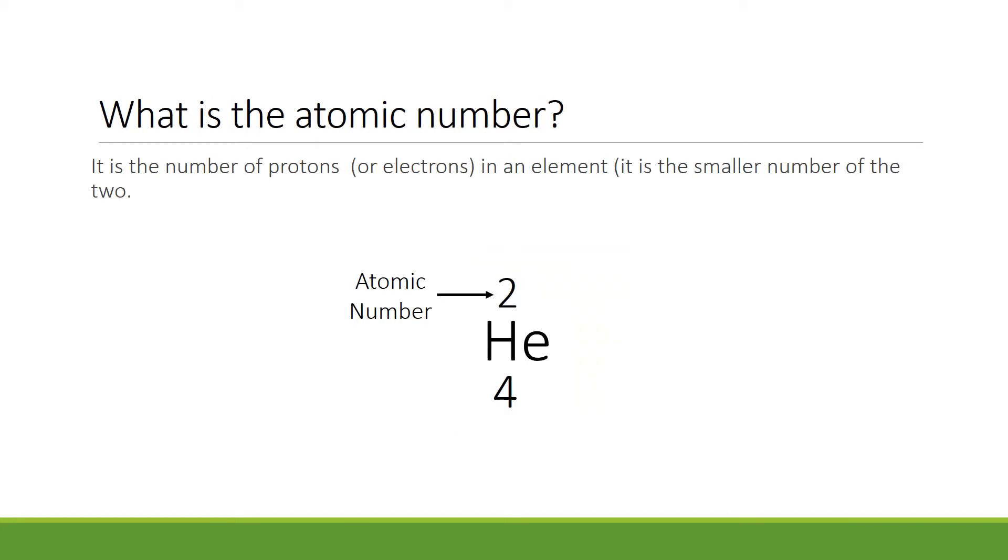This represents helium from the periodic table. Capital H, small case E, is the chemical symbol for helium. What is the atomic number? It is always the smaller number and it represents the number of protons or electrons in an element. In the case of helium, the atomic number is 2.